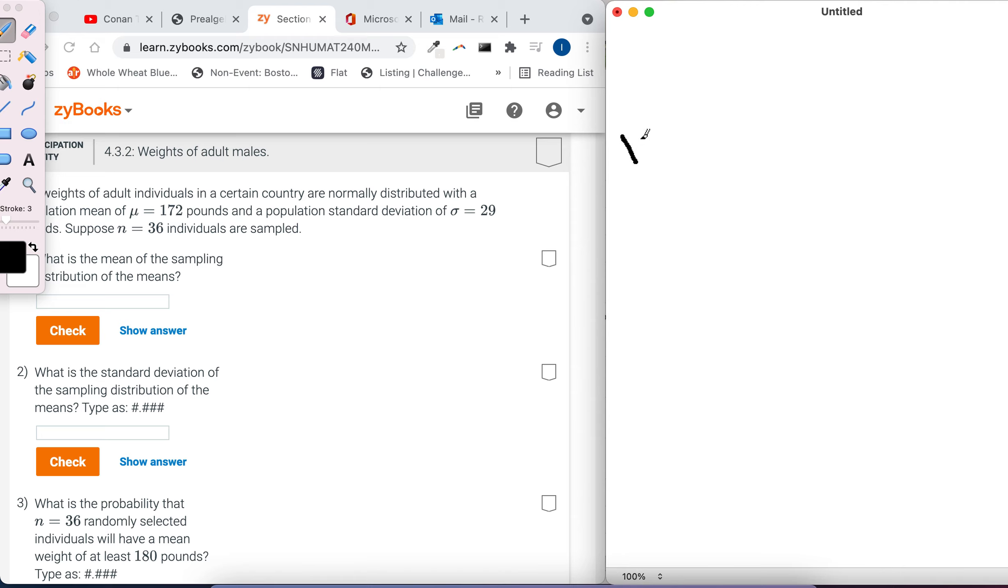The mean is x bar, the mean where you add them all up and divide by how many there are. There's nothing tricky about that. The mean is the same as the population mean. So the mean of the sampling distribution of the means for this problem is 172. It's the same as the population mean.